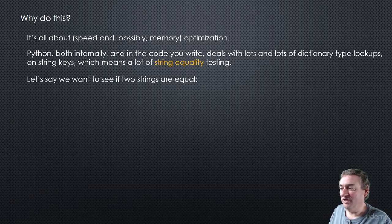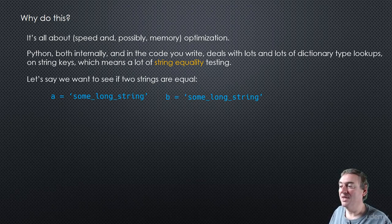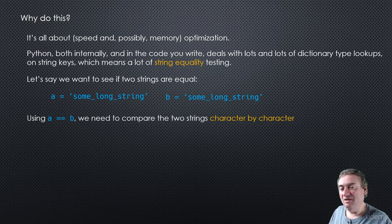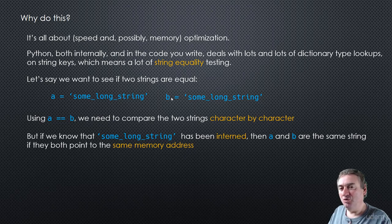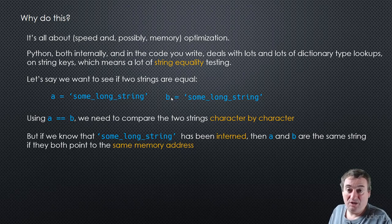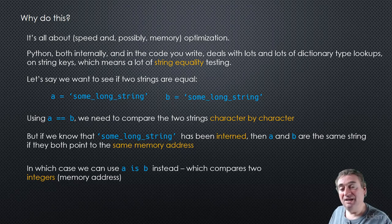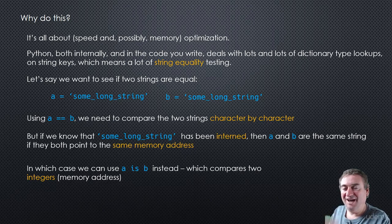Let's look at an example. Let's say A equals some long string and B is the same value. If we use the equality operator A == B to compare the two strings, we have to do this character by character. However, if we know that the string has been interned, then A and B are both going to point to the same memory address. In that case, we can check whether they have the same memory address using the identity operator 'is' instead of the equality operator.